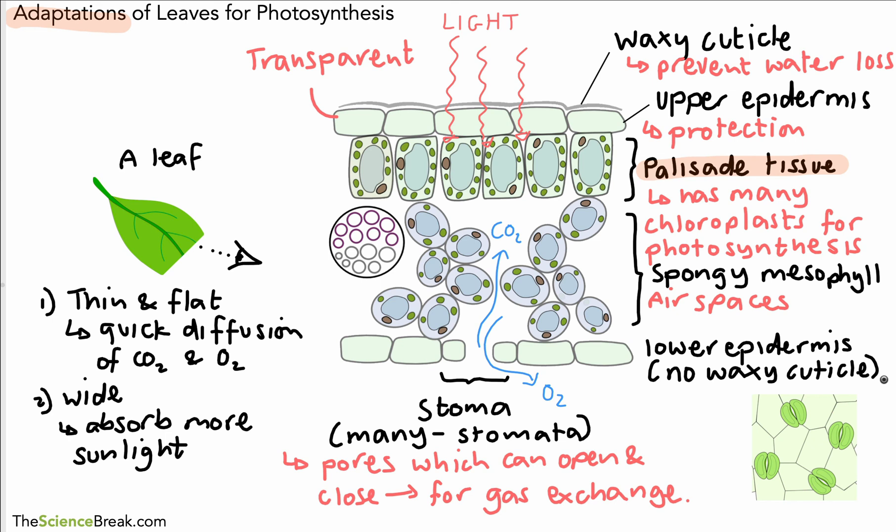So there we have it, the adaptations of leaves for photosynthesis. If you downloaded the work-along sheet, you can make these notes on your own sheet. If not, you can just make them on a piece of paper. But lots of very important information about a topic that appears not only in key stage 3 biology, but also in GCSE, both in combined science and triple science, and also all the way up to A level. So a very good basic idea of photosynthesis in this video. Thanks for watching and I'll see you soon.